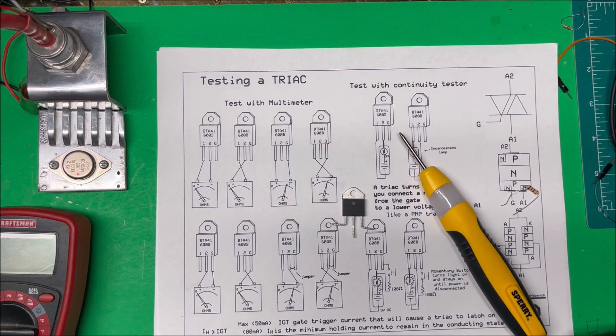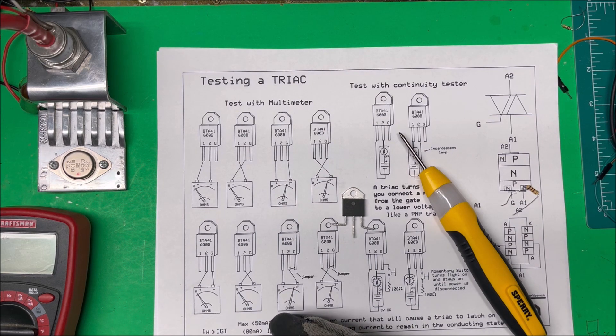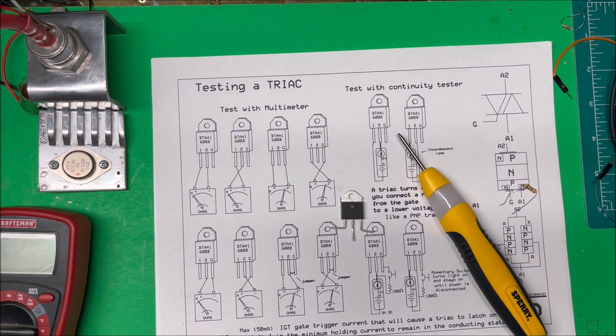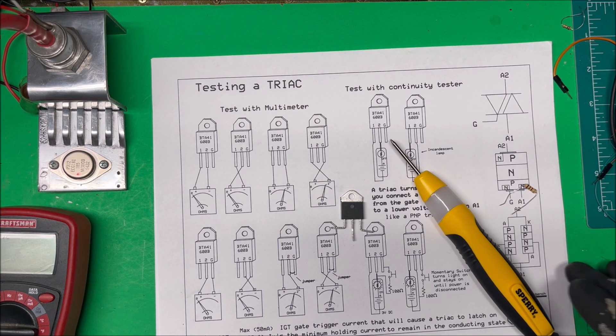I'm going to use a 3-volt battery here and a 100-ohm resistor. If it's not high enough, then it won't latch in. And then we need this IH, which is the minimum holding current so that the unit will remain in the conducting state.